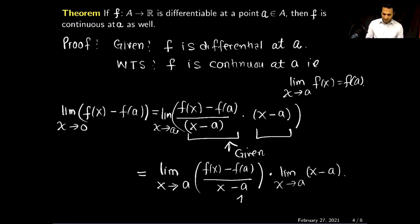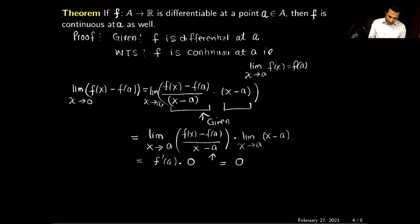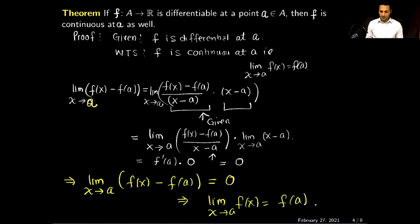This step is only valid because both limits exist — if one did not exist we could not use the algebraic limit theorem. The first limit equals F prime of a, and the second limit equals 0. So the product is F prime of a times 0, which equals 0. Therefore, the limit as x approaches a of F(x) minus F(a) equals 0, which implies the limit as x approaches a of F(x) equals F(a). This is the definition of continuity, so F(x) is continuous at x = a.